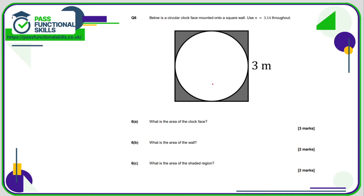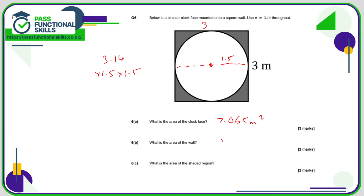Question 6: what is the area of the clock face? The clock face is circular and sits inside a 3 by 3 square, so the diameter is 3 and the radius is 1.5. The area is 3.14 times 1.5 times 1.5, giving 7.065 square metres. The wall area is 3 times 3 = 9 square metres. The shaded region is 9 minus 7.065, which is 1.935 square metres.